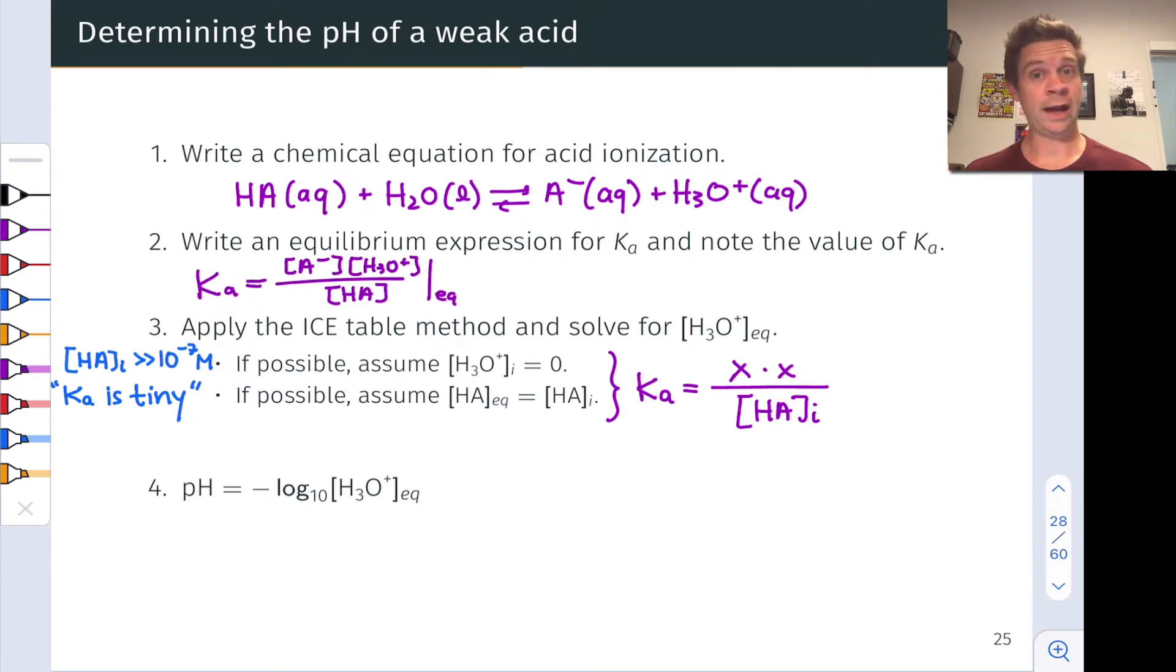since H₃O⁺ and A⁻ come from the same source, both come from this acid ionization chemical equation that we wrote in step one, and no hydronium was present initially.